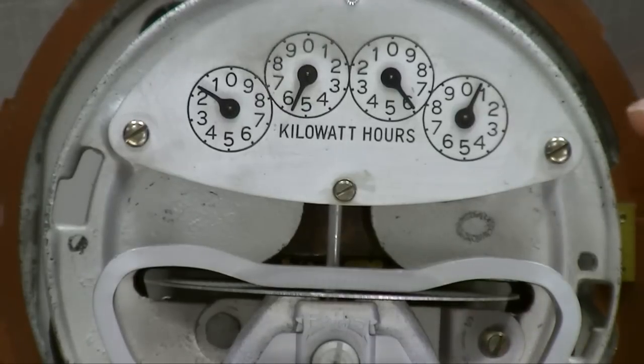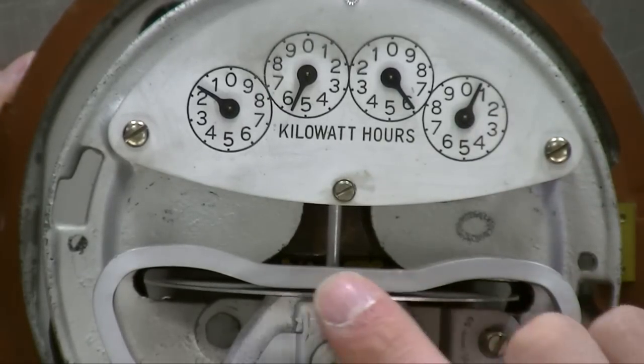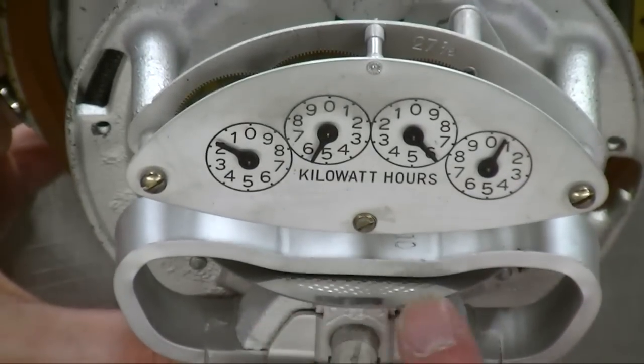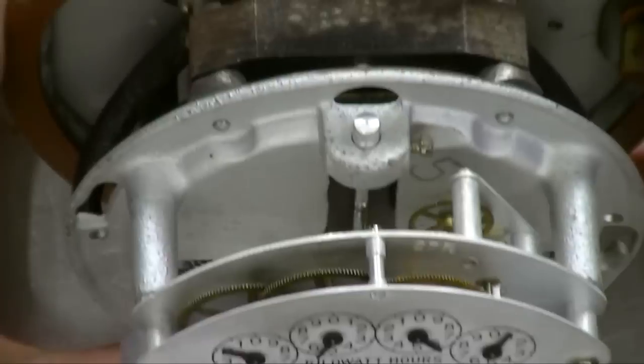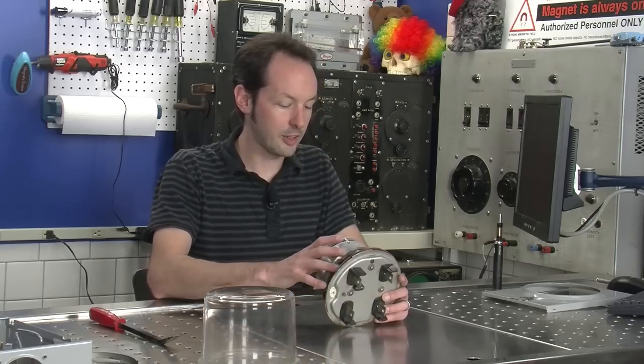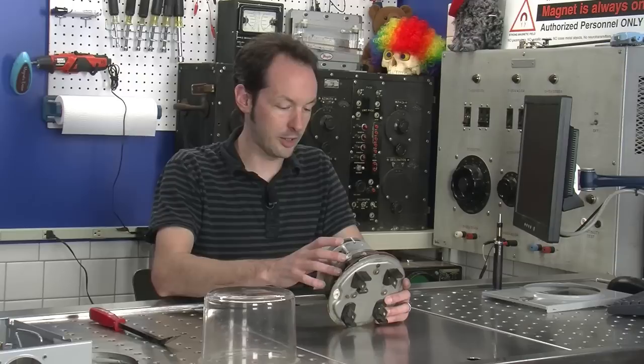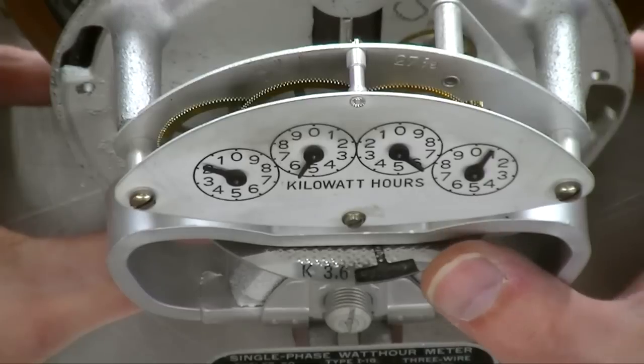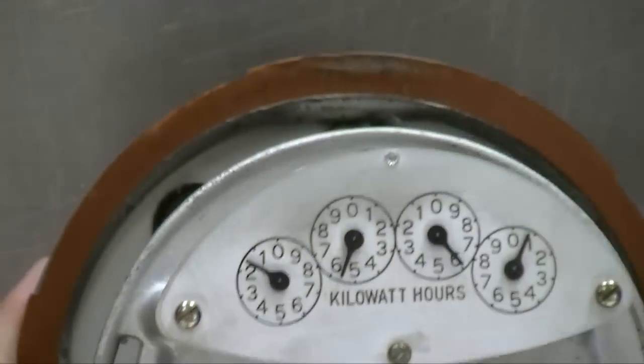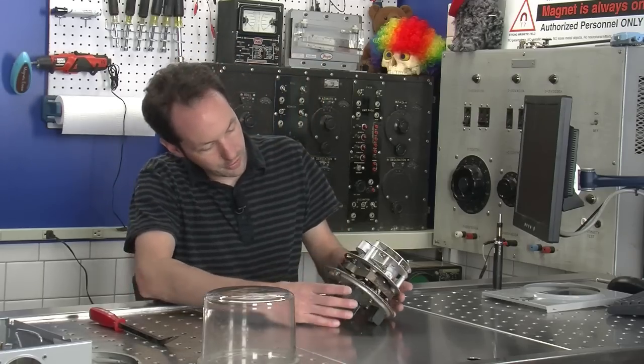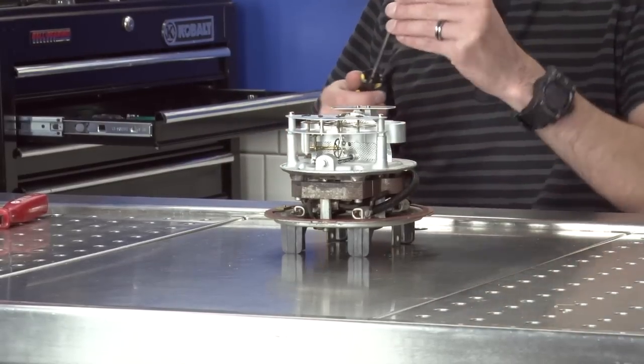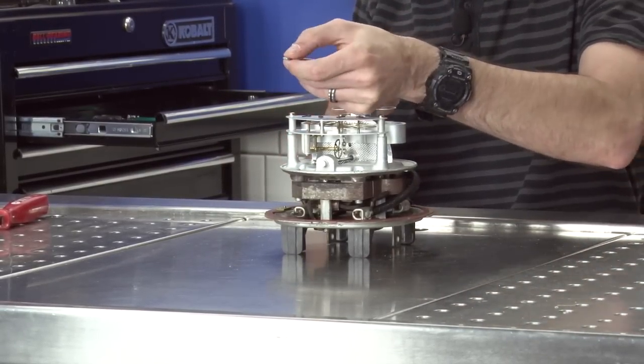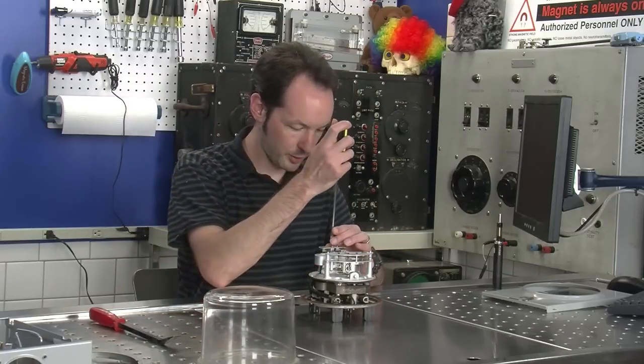Now we can see down in there we can see our numbers and there's the wheel. This is the part that spins around. If you look inside if you have an old analog meter this is what you'll see spinning around. Our black stripe is labeled K 3.6. I have no idea what K 3.6 means, but somebody does and if you do comment I'd like to know. So let's start taking this apart.